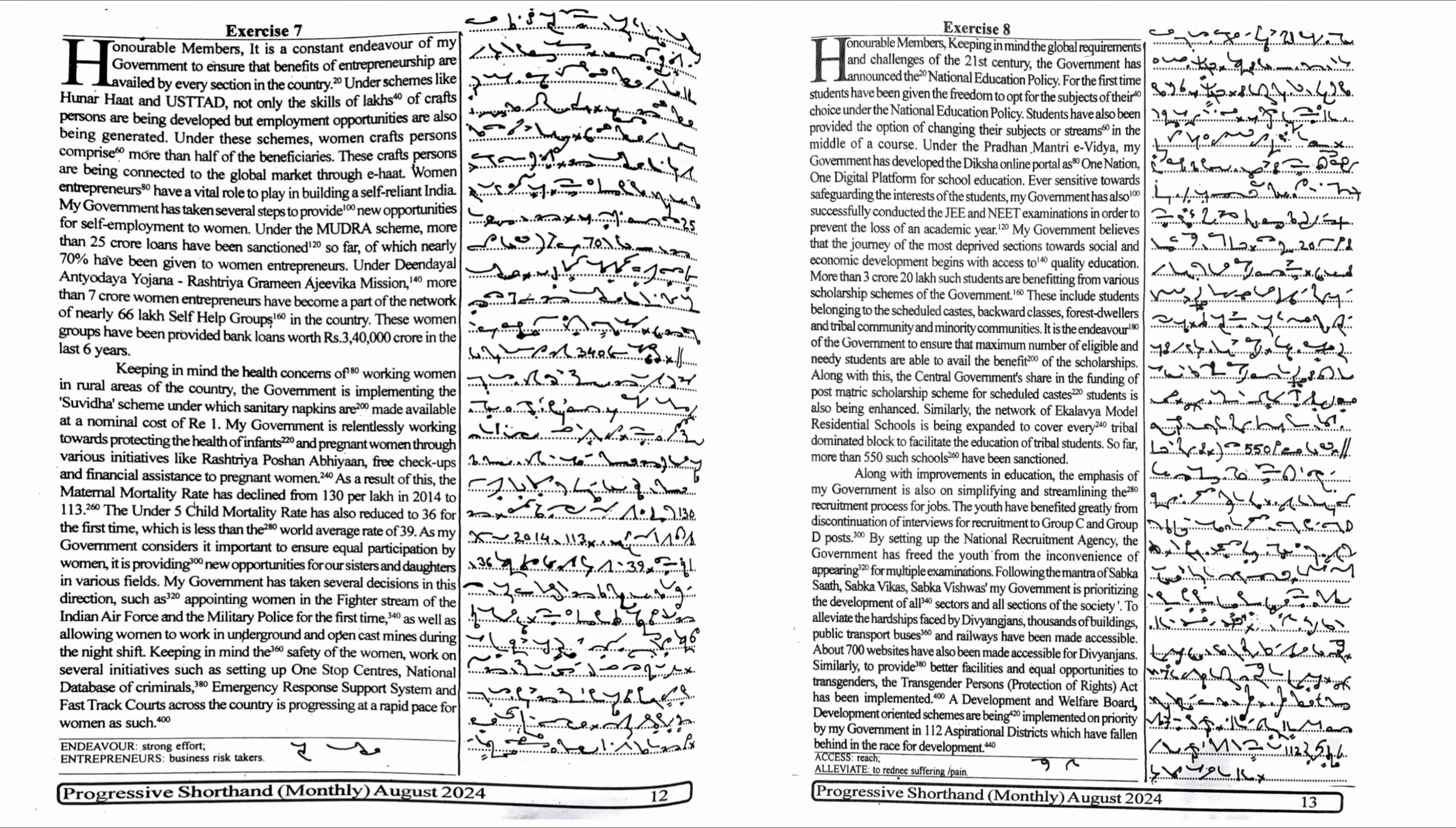Following the mantra of Sabka Saath, Sabka Vikas, Sabka Vishwas, my government is prioritising the development of all sectors and all sections of the society. To alleviate the hardships faced by the Divyangjans, thousands of buildings, public transport buses and railways have been made accessible. About 700 websites have also been made accessible for the Divyangjans.